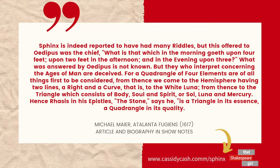The Sphinx played a prominent role in European art during the Renaissance, and in a book from 1617, Michael Mayer stated that he thought the solution to the Sphinx's riddle was actually the Philosopher's Stone. He says: 'Sphinx is indeed reported to have had many riddles, but this offer to Oedipus was the chief: What is that which in the morning goeth upon four feet, upon two feet in the afternoon, and in the evening upon three? What was answered by Oedipus is not known, but they who interpret concerning the ages of man are deceived. For a quadrangle of four elements are, of all things, first to be considered. From thence we come to the hemisphere having two lines, a right and a curve — that is, to the white luna — from thence to the triangle which consists of body, soul, and spirit. Hence the stone is a triangle in its essence, a quadrangle in its quality.'